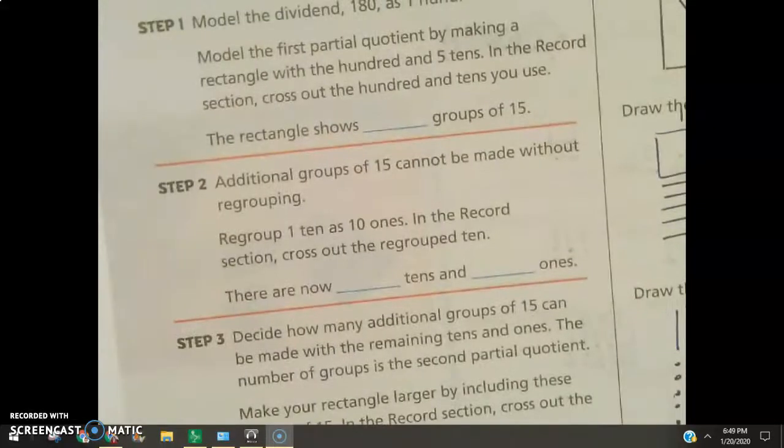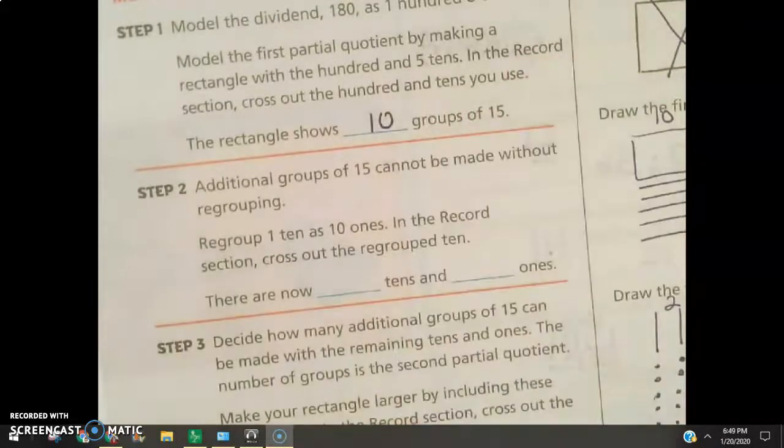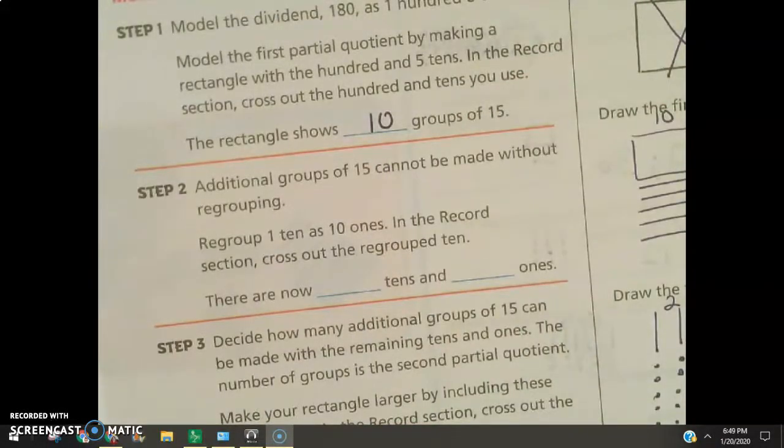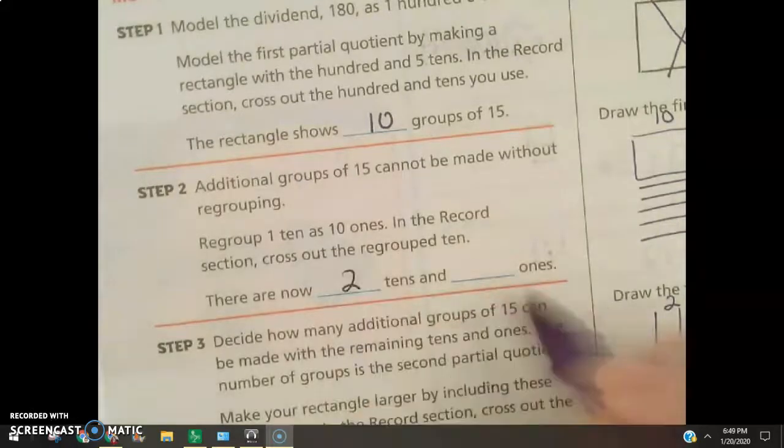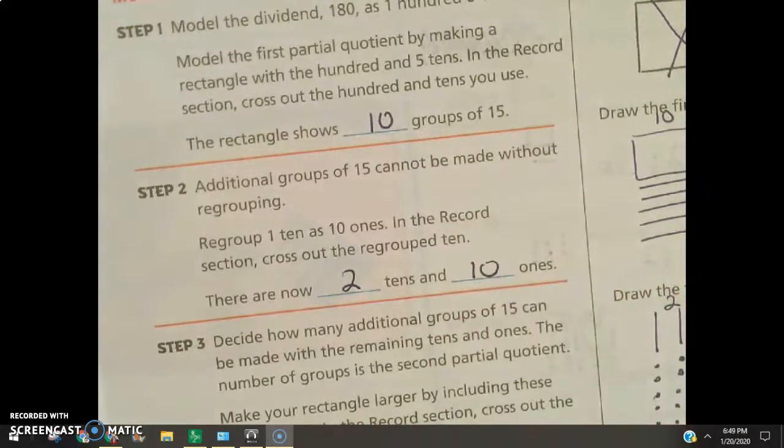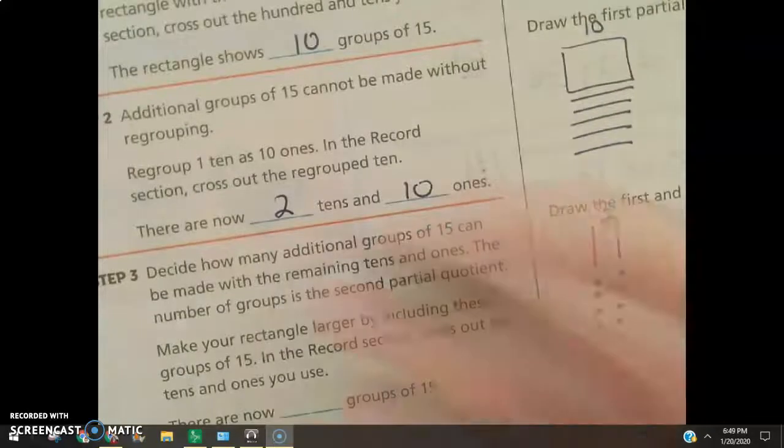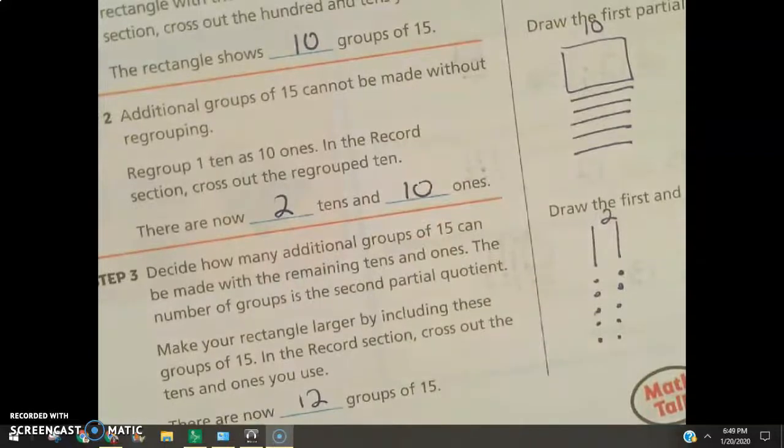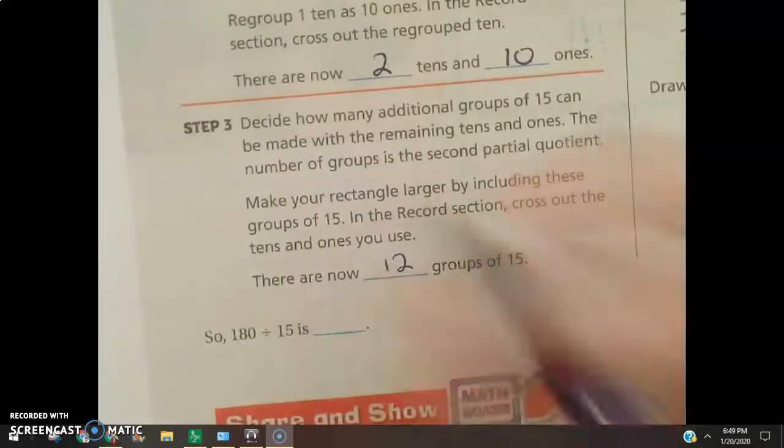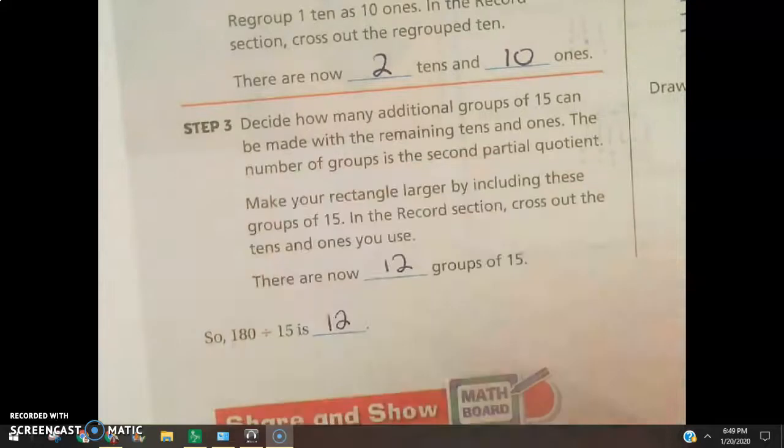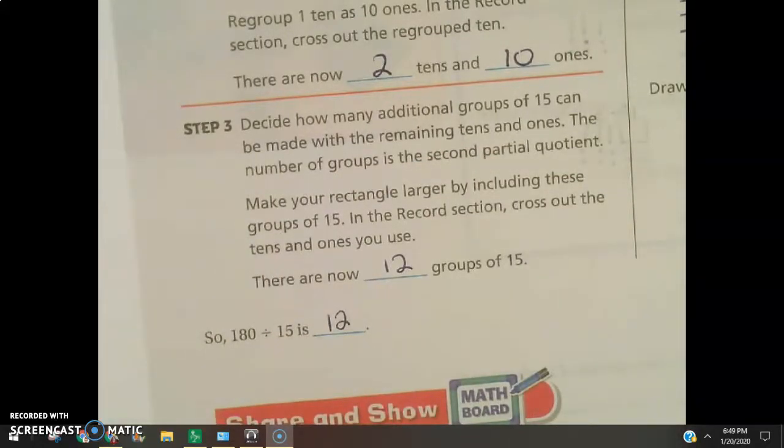So, if I come over here, the first showed that there were 10 groups of 12. And, we had two 10s and 10 ones left over. So, we had a total of 12 groups of 15. So, 180 divided by 15 is 12. And, that's a short lesson on how you use base 10 models in order to help you divide double digit divisors.